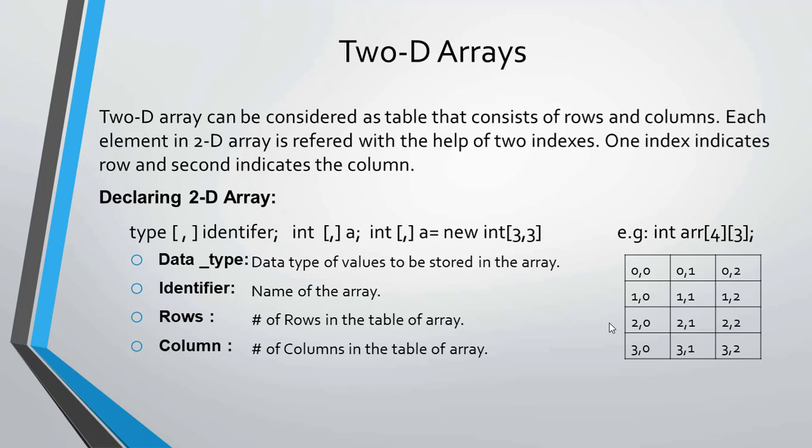You can see on the screen the declaration of a two-dimensional array. The syntax uses a data type and an identifier. For example: int[,] square;